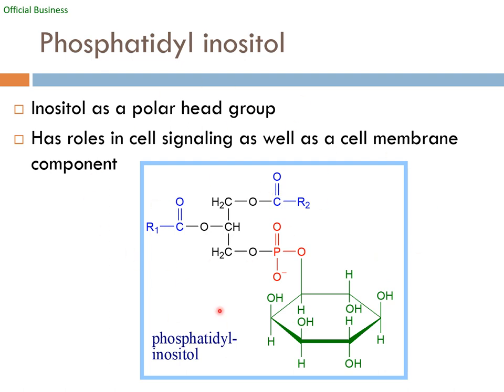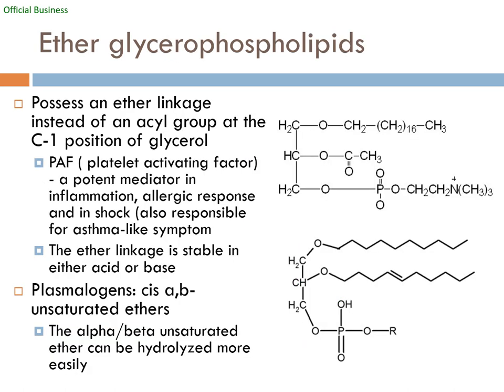Another functional group that can be attached to the phosphate group of phospholipids is the inositol group. Some phospholipids have an ether group and a phosphate. These are found in platelet activating factor, which is a mediator for inflammation, allergic response, and shock. The ether linkage provides stability to this phospholipid. Ether glycerophospholipids — plasmalogens — have an ether group providing additional non-polar character and stability. They tend to clamp together, and their function is related to platelet activating factor and blood clot formation.